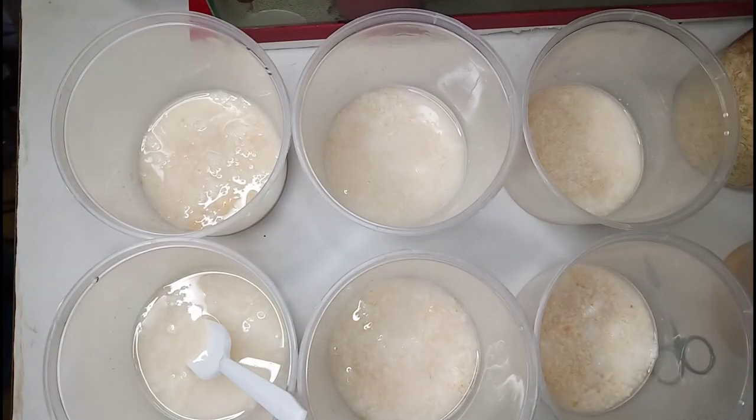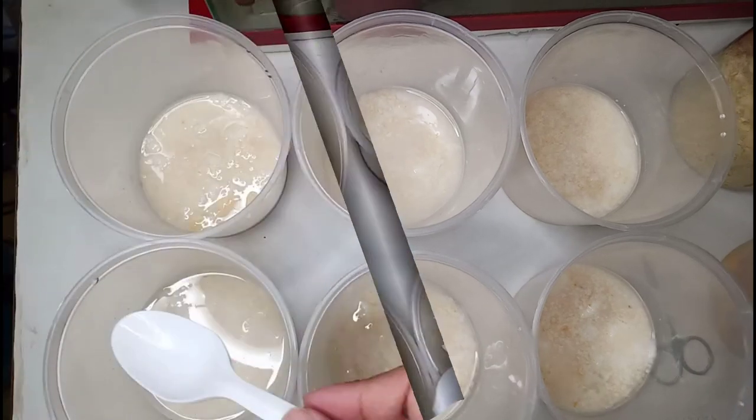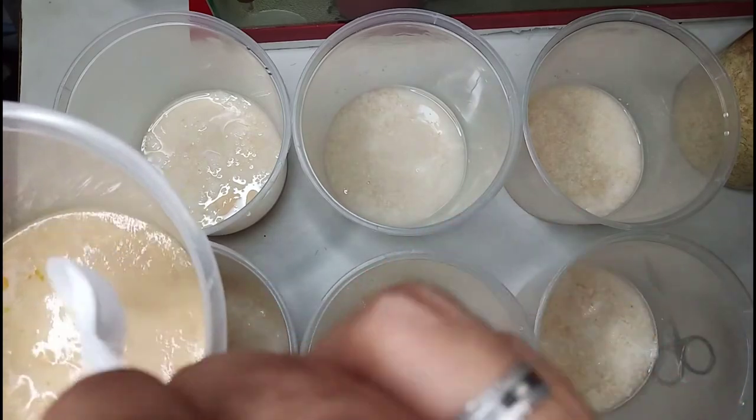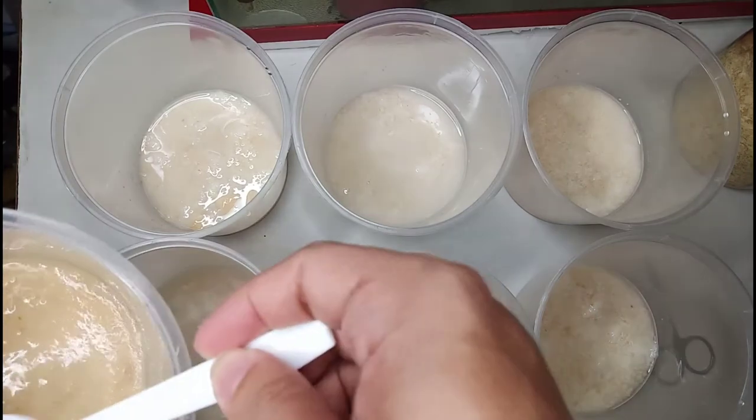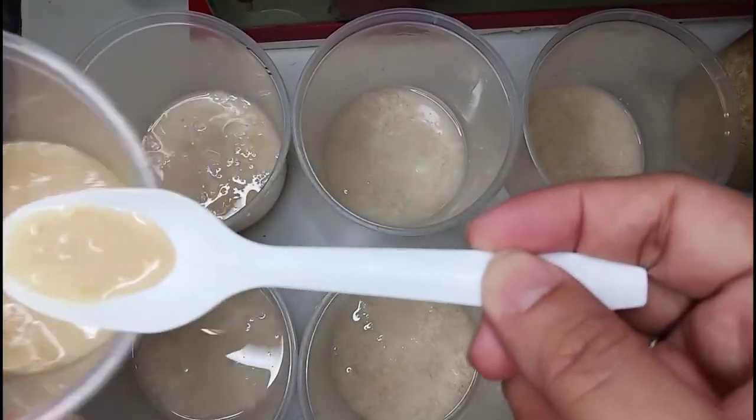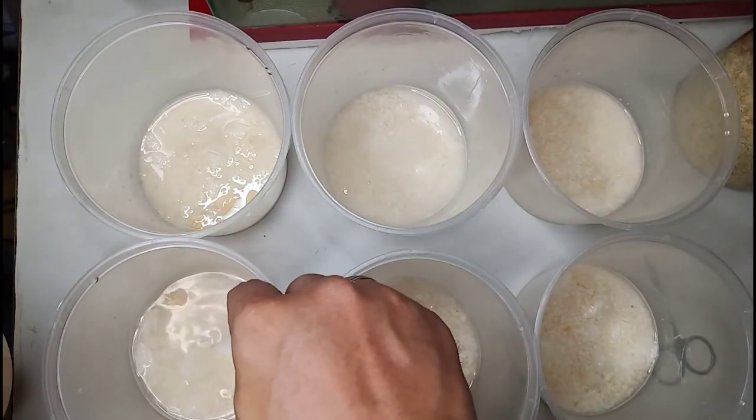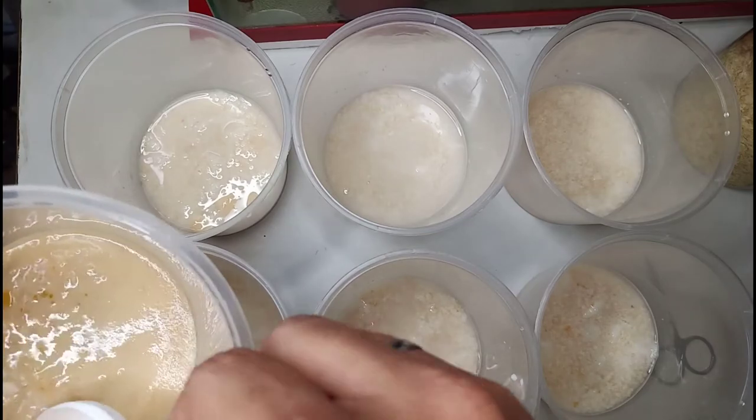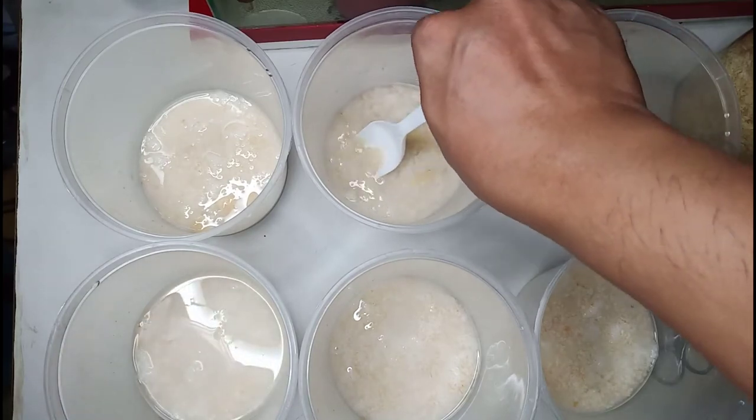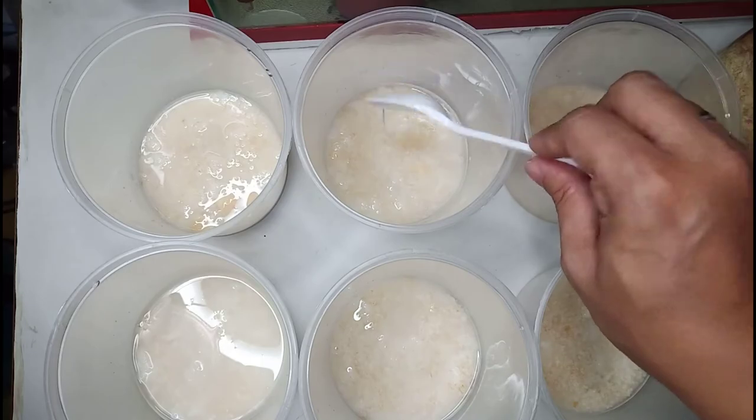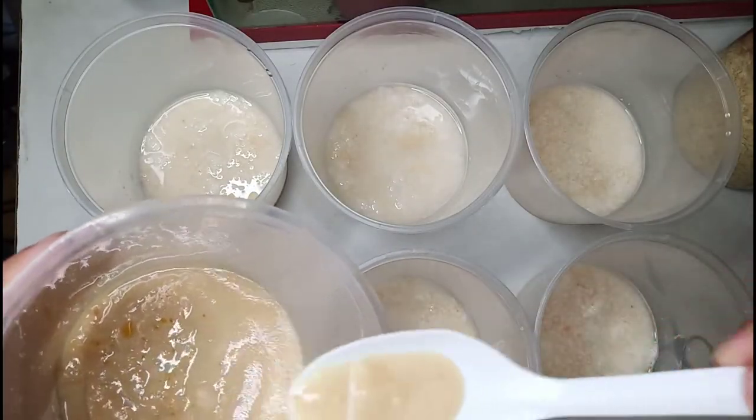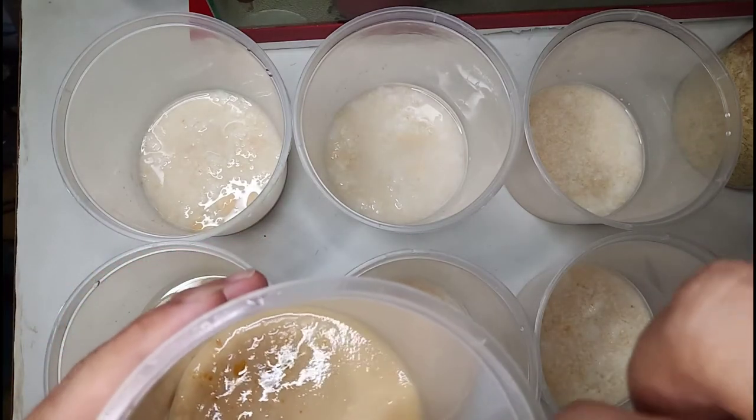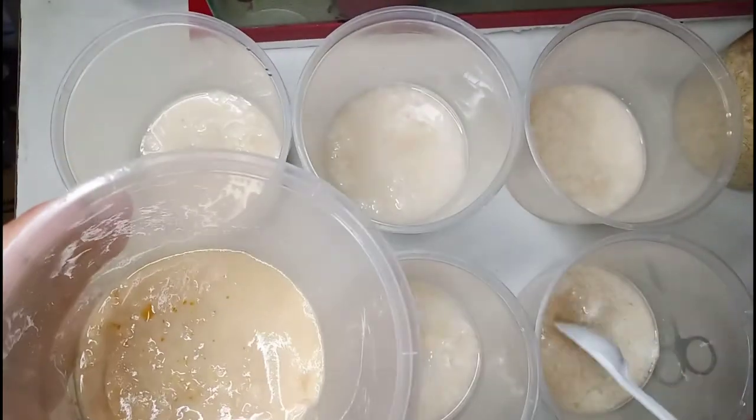Take a spoon, a plastic spoon. You can either get from here, just a little amount of it will do. Make sure there are worms. Put it to the mixture like that. Get more from your culture. Take just a little amount of it like this, put it there. Get some more for the other.